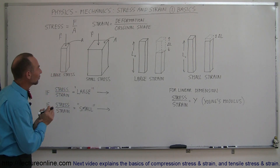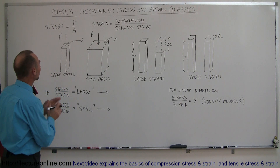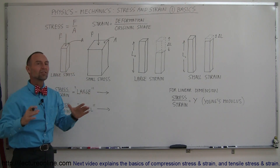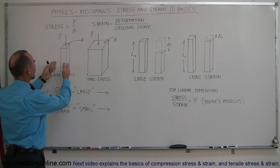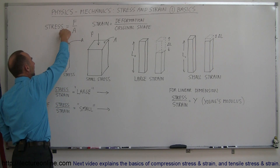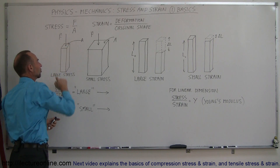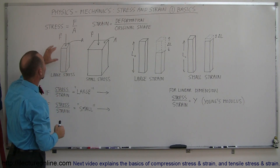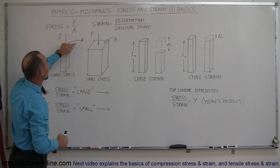First, we're going to define the term stress. Stress in a material is simply the force divided by the cross-sectional area over which it is applied. For example, if you have a beam like this and you push down on it with a certain amount of force, and the beam has a certain cross-sectional area, the stress is simply expressed as the ratio of force divided by area.